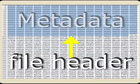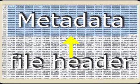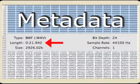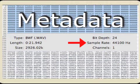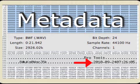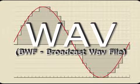The header contains the metadata. For example, it tells the computer the file length, the number of channels, the sample rate, the bit depth, the timestamp, and the file type.